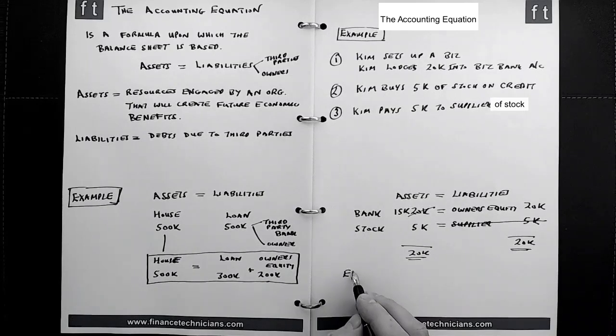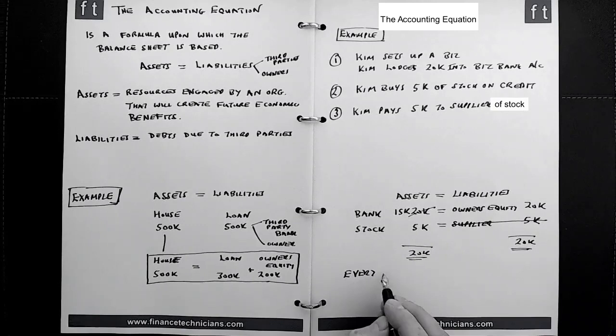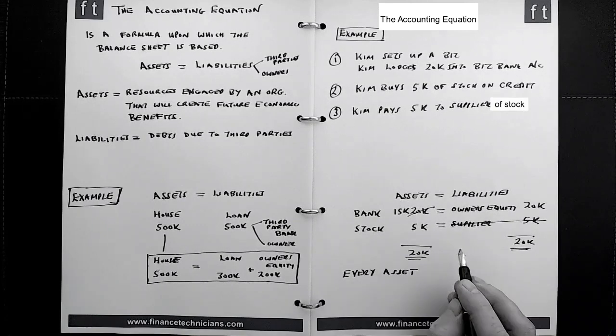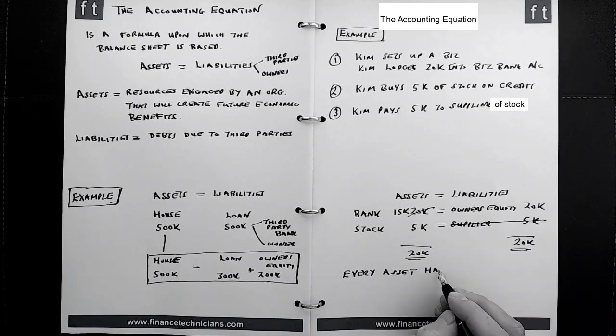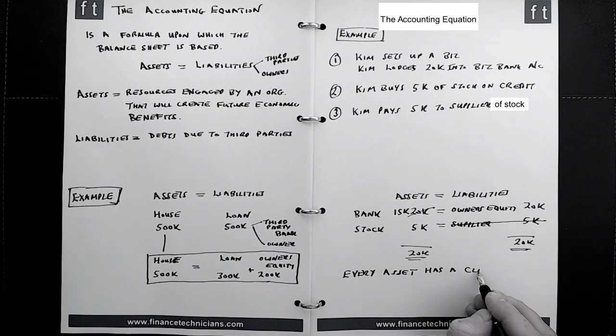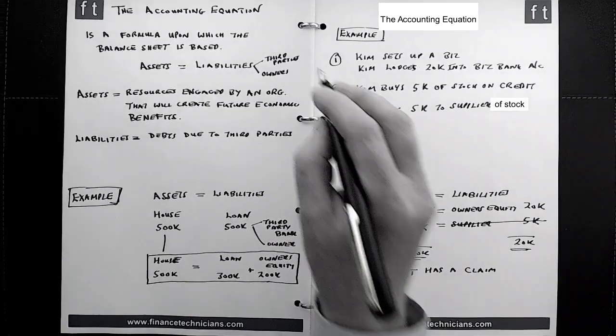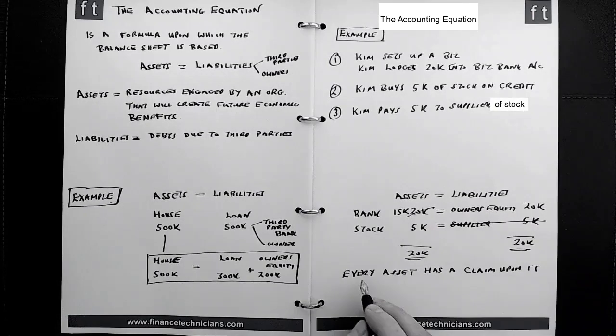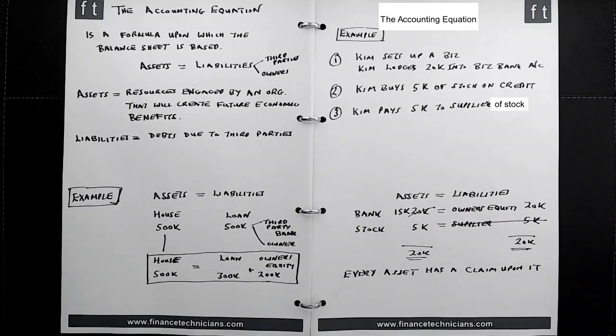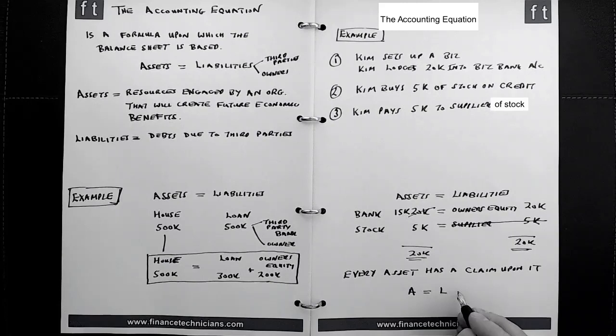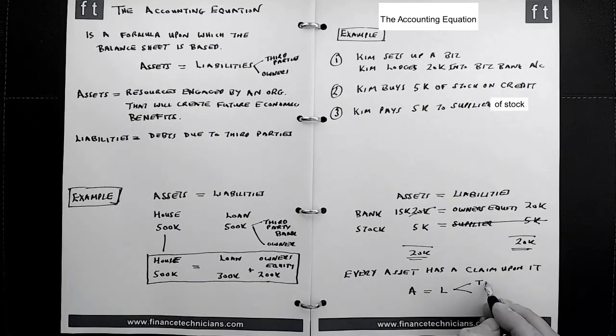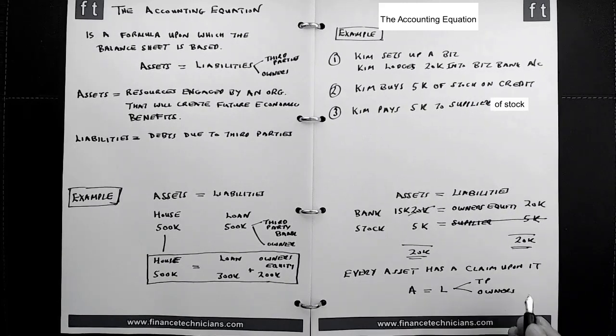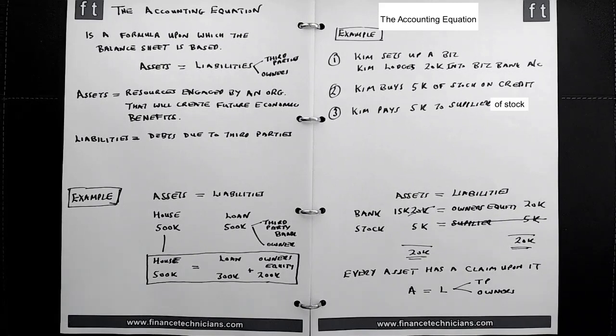Just be aware that every asset of an organization or a business has a claim upon it, and that claim is either from a third party or the owners of the business. Every asset has a claim upon it. Beware of that: assets equals liabilities, and liabilities can be to the third party or the owners of the business. That effectively is what the accounting equation states.